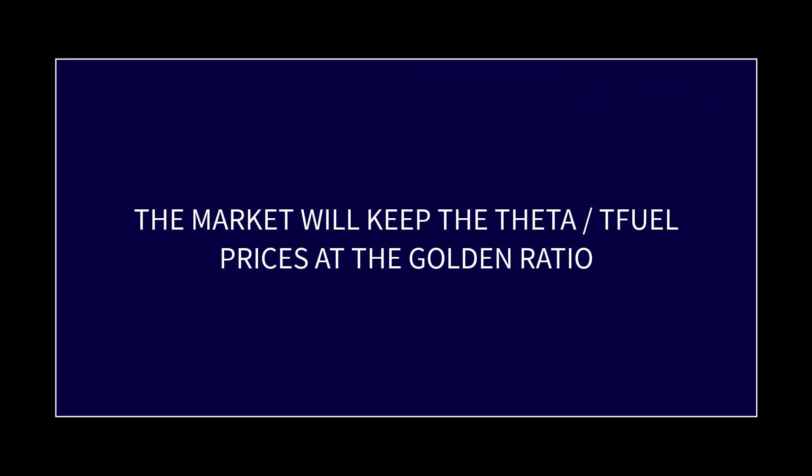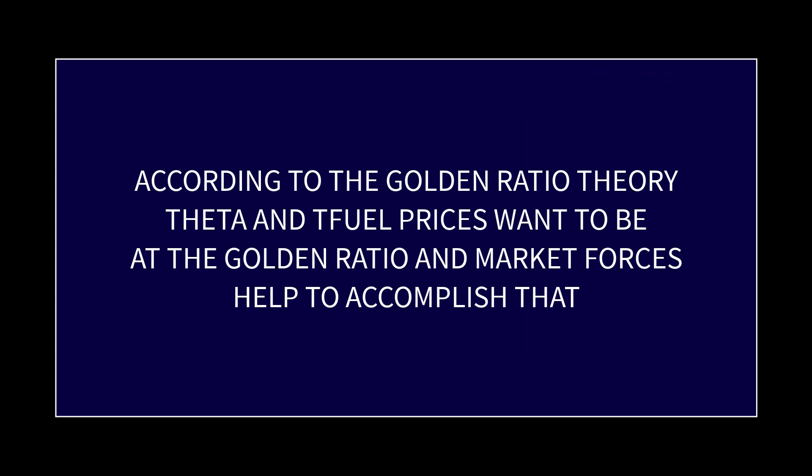The theory of the golden ratio is that market forces will tend to keep the price of TFuel and Theta at that golden ratio. Money will flow into whichever token is paying better staking rewards. If TFuel is paying better, money flows in, bringing TFuel's price up and possibly bringing Theta's price down, or a combination of both, to keep the price ratio at or near 6.25. The same applies in reverse if Theta staking is paying the better rewards.